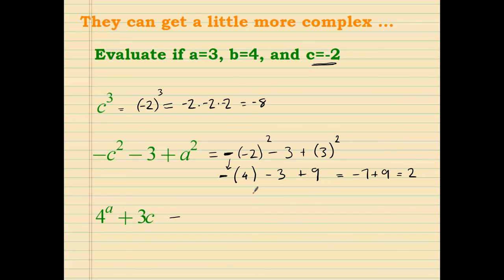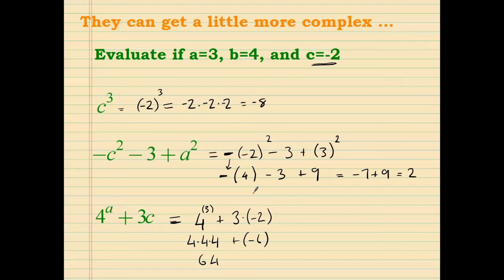On the next example, the exponent is the variable. All we do is substitute — instead of the variable, put 3. You can still use parentheses on positive values too. So 4 to the 3rd power is 4 times 4 times 4 equals 64, and 3 times negative 2 equals negative 6. Then 64 plus negative 6 is the same as 64 minus 6, which equals 58.